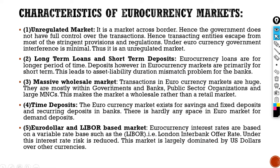The third feature is a massive wholesale market. Transactions in Euro currency markets are huge. They are mostly within governments and banks, public sector organizations, and large MNCs. This makes the market a wholesale rather than a retail market. The next characteristic is time deposit. The Euro currency market exists for savings, fixed deposit, and recurring deposit in banks. There is hardly any space in the Euro market for demand deposits.